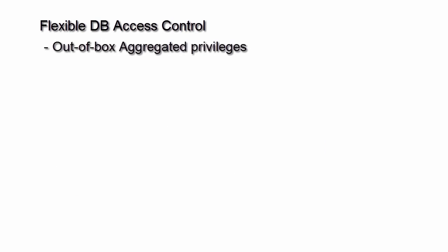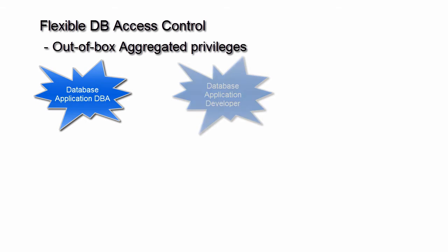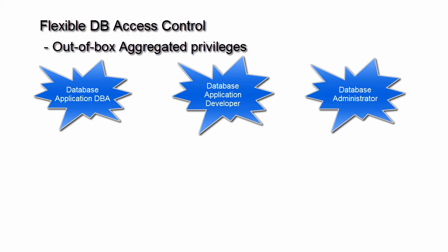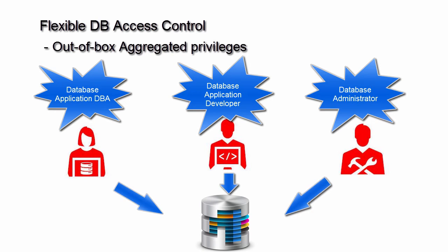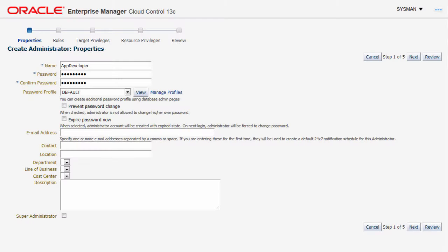Out-of-box aggregated privileges are also available, which makes the configuration easy to use. For instance, there are privileges like database application DBA, database application developer, and database administrator. Now, in the demo, I'll show you how we can use flexible DB access control privileges to differentiate access between an application developer, an application DBA, and a database administrator, all managing the same target database but differing in functional access.